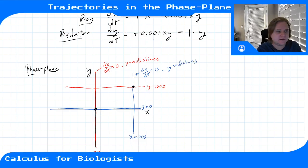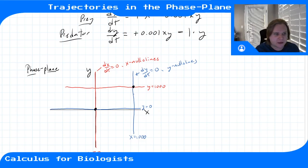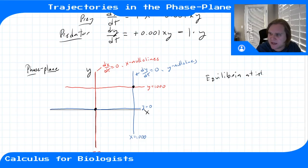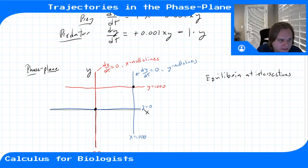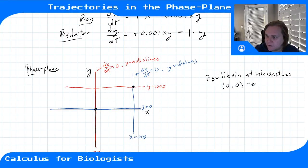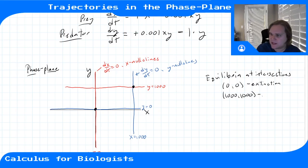When x equals 1000, dy/dt is zero — no change in the number of predators. When y equals zero, there's no growth or decay of predators; they stay at zero. The equilibria of the system are found at intersection points where both dx/dt and dy/dt are zero simultaneously. We had two equilibria: one at (0, 0), the extinction state, and one at (1000, 1000), a balanced equilibrium.